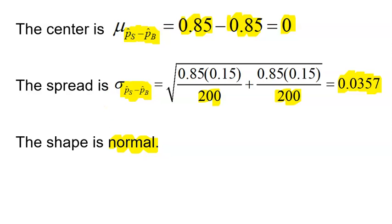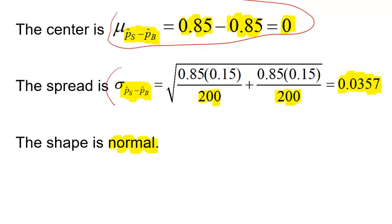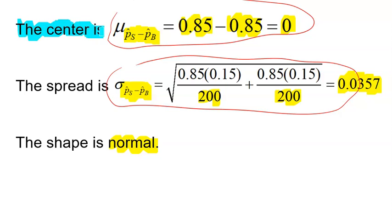Now, what a lot of you are doing is you're just writing this, or you're just writing this. Please, I want a sentence, and it's really easy to make a sentence. All you got to do is, in front of it, say, the center is, then give me the mean. The spread is, then give me the standard deviation, and, of course, the shape is. So really simple, just try to make it sentences because it asks you to describe, and describe implies that you should have some type of sentences there.